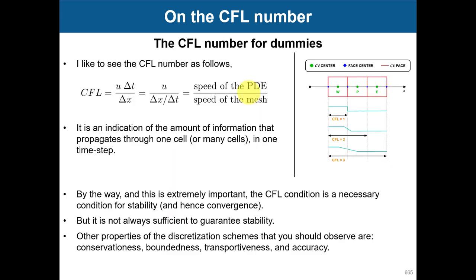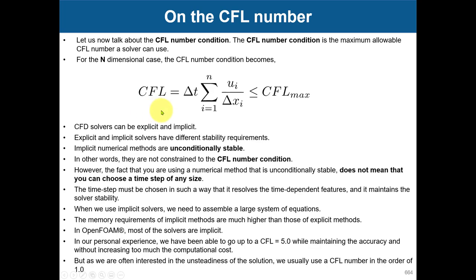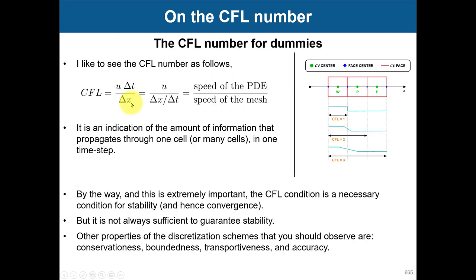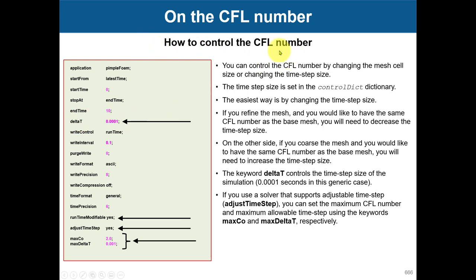So how can you control your CFL number? You can control it by changing your mesh size — this criterion is local, so in each direction you can have a different CFL number. You can also control it by changing your physics — lower velocity gives a lower CFL number. But the most common way is to change delta T in the control dictionary. Smaller delta T translates to a smaller CFL; larger delta T translates to a larger CFL number.